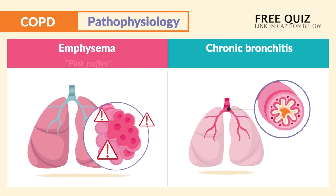For the pathophysiology, there are two types of COPD: emphysema and chronic bronchitis, commonly called the pink puffer and blue bloater.